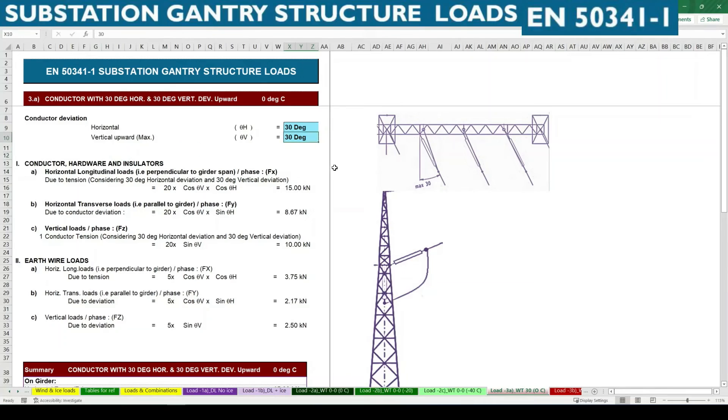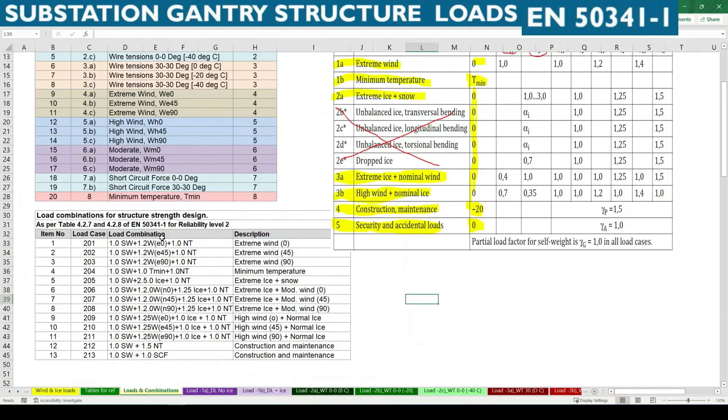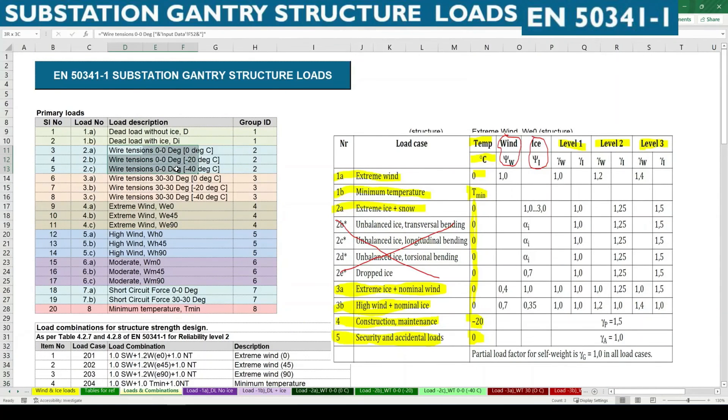In sometimes there is also some vertical downward cases, for that we need to enter here minus 30 degree so that it will be considered as a downward direction where we used to get some minus, that is a uplift force in vertical cases. So that is why we need to calculate this load cases, primary cases in 0 0 and 30 30, maximum deviation and no deviation of conductors or wire tensions.